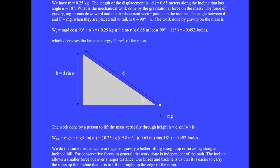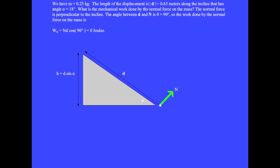The incline allows a smaller force but over a larger distance. Our knees and back tell us that it is easier to carry the mass up the incline than to lift it straight up the edge of the ramp. The normal force points perpendicular to the incline, and the angle between the displacement d and the normal force is theta equals 90 degrees. So the work done by the normal force on the mass is W sub n equals n times d times cosine 90 degrees equals 0 joules.